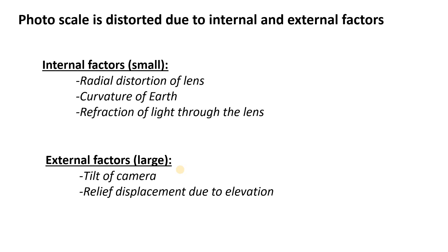So with all of that said and introduced, where do some of these scale problems come from? We can divide them really into internal and external factors. Internal factors tend to be very small. These are things like the radial distortion of the lens, the refraction of light through the lens, and the curvature of earth. External factors tend to be large, things like the tilt of the camera or relief displacement due to elevation variations on the ground.